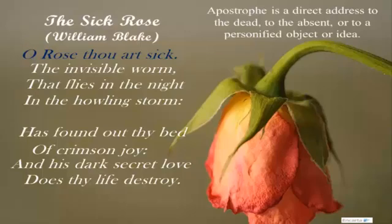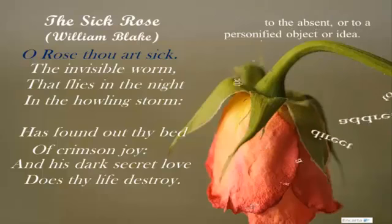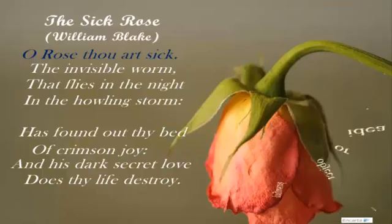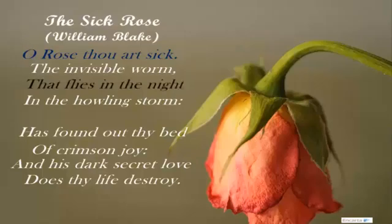In nature we often find that some organisms or species come together and form a relationship — they live and coexist very happily. This kind of relationship is called a symbiotic relationship. However, the association and relationship between the rose and the invisible worm is not symbiotic or of mutual benefit. The worm is evil in nature, and the innocent rose cannot see or realize this.